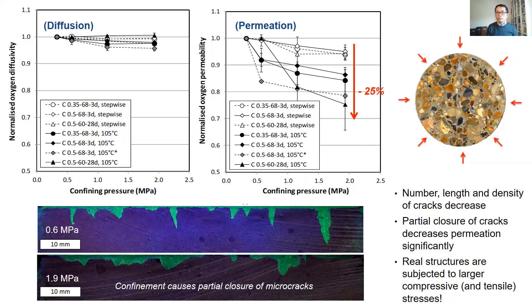It is also worth noting that the applied confining pressure is actually small relative to the strength of the concrete — real structures are subjected to much larger stresses. Therefore, one may deduce that the effect of microcracks is small in structural locations that are under compression, but can be substantial in areas under tension. This highlights the importance of measuring transport under realistic loading conditions — it is definitely not an easy experiment, but we certainly need more data and effort in this area.